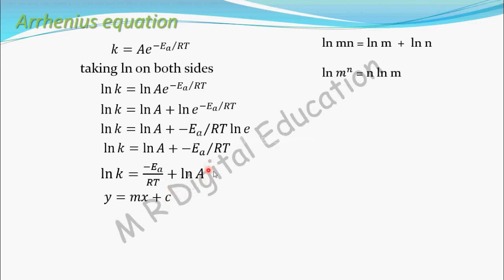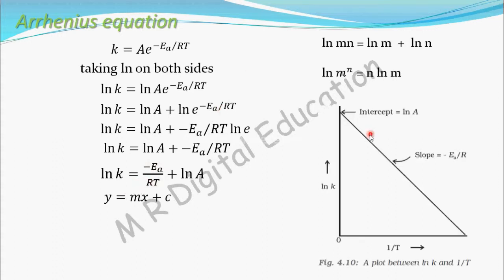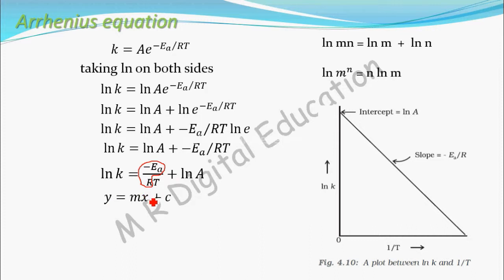This equation is looking like the Y equal to MX plus C equation. But see here, the slope is negative — minus Ea by R — so the curve will be downwards. When you draw the graph, X is 1 by T, the slope M is minus Ea by R, 1 by T is the independent variable X, ln K is the dependent variable Y, and ln A is the intercept on the Y axis, which is C.